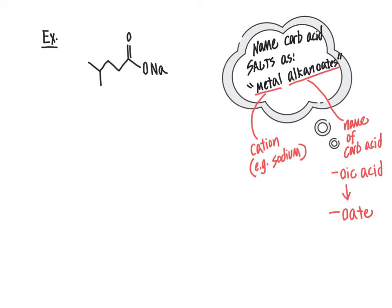Let's apply these rules to an example. The starting material for this carboxylic acid salt — recognizing that the oxygen atom shown would originally have been an OH group — has five carbons in the longest chain with a methyl branch at carbon four, so it would have been 4-methylpentanoic acid. But since it is now a salt, the last part of the name becomes 4-methylpentanoate, with sodium at the front as the counterion. The name is therefore sodium 4-methylpentanoate.